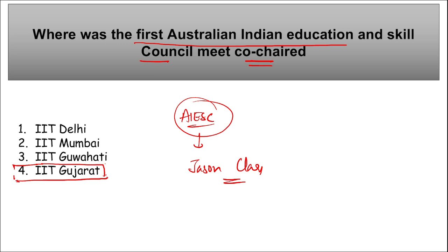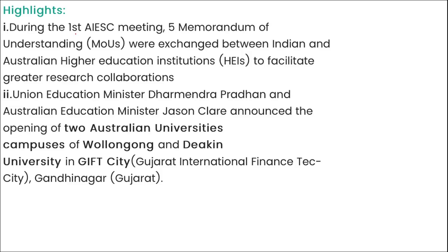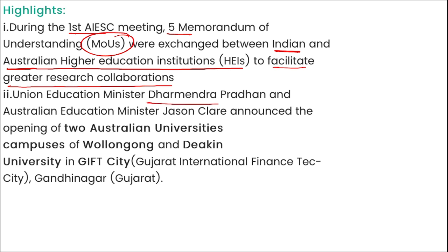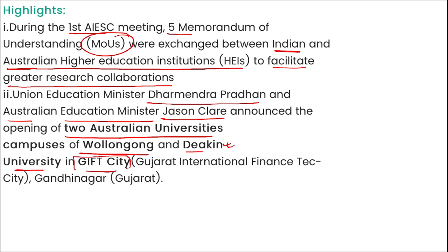This meeting was held at IIT Gandhinagar, Gujarat on 6th November 2023. During this first AIESC meeting, five MOUs were exchanged between Indian and Australian higher education institutes to facilitate greater research collaboration. The education ministers announced the opening of two Australian university campuses — Wollongong and Deakin University — in GIFT City. Deakin University was the first foreign university to set up a campus in India.